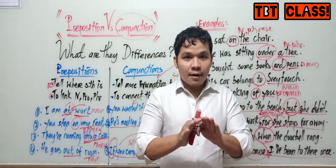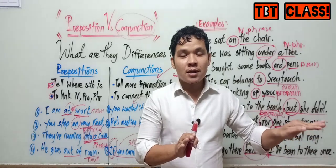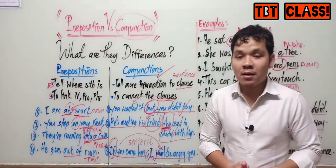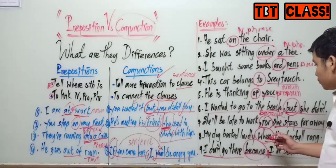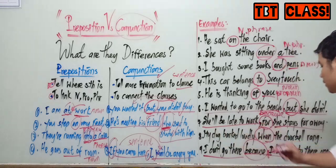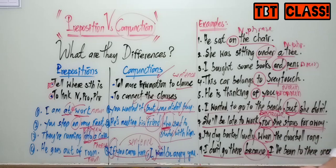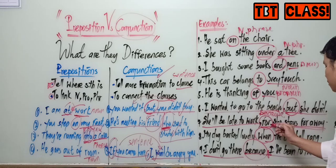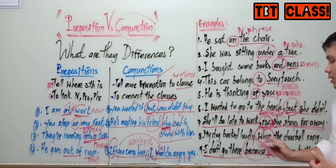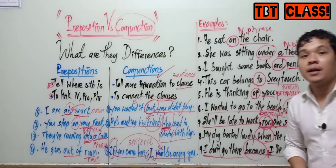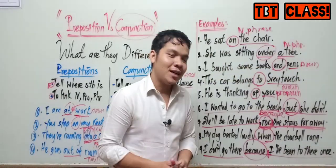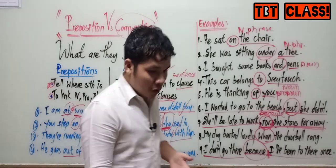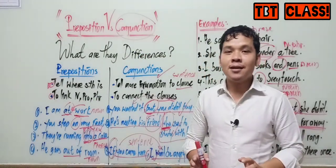The sentence after the conjunction we call a subordinate or dependent clause. The main part we call the main clause. For example, in number seven, "for she stays far away" is the subordinate clause. So everyone, do you understand the difference between preposition and conjunction? I hope everyone will enjoy learning this!